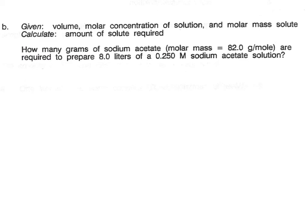For the next problem, we start by reading through to determine if it's a percent or molarity problem. Right away we see a capital M — no percent sign or the word percent anywhere — so this is a molarity problem. Molarity is moles of solute per liter of solution. Next, we decide if it's a find-it or use-it: we are given the molarity, so this is a use-the-molarity question. Reading the question: how many grams of sodium acetate with a molar mass of 82 grams per mole are required to prepare 8 liters of a 0.250 molar sodium acetate solution?